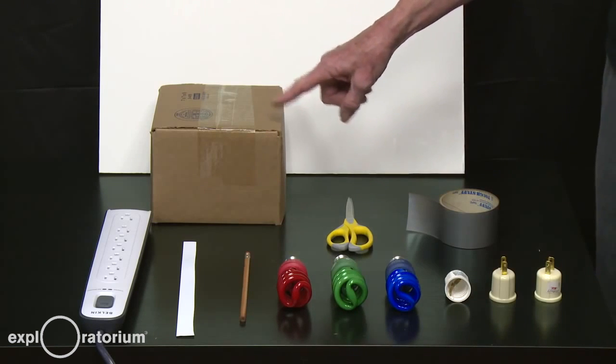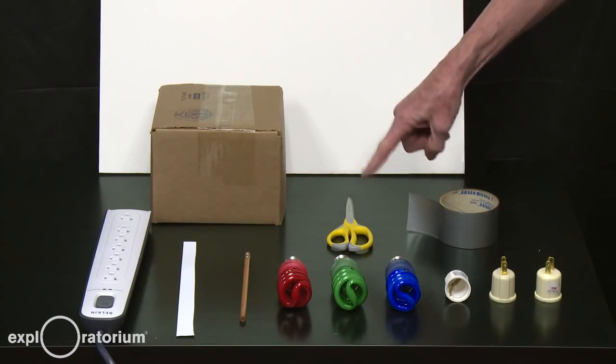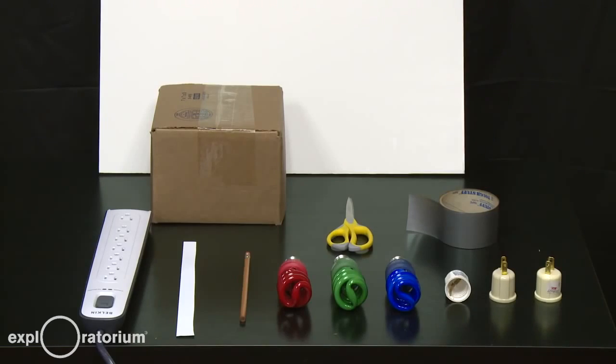You'll need a cardboard box to tape to the back of the foam core to make it stand upright. And for tools, you'll need a pair of scissors and a roll of duct tape.